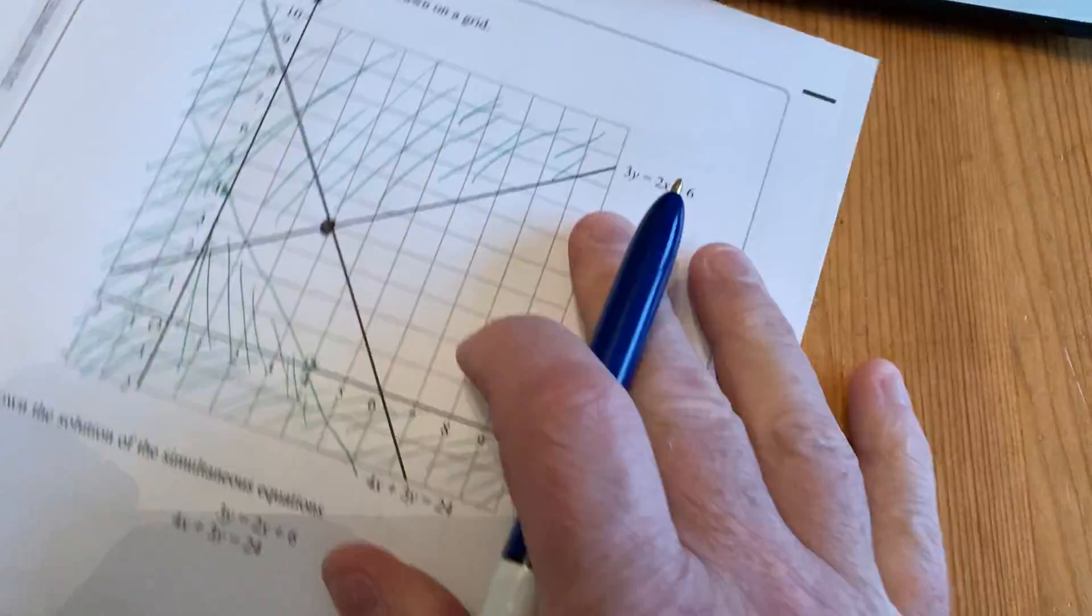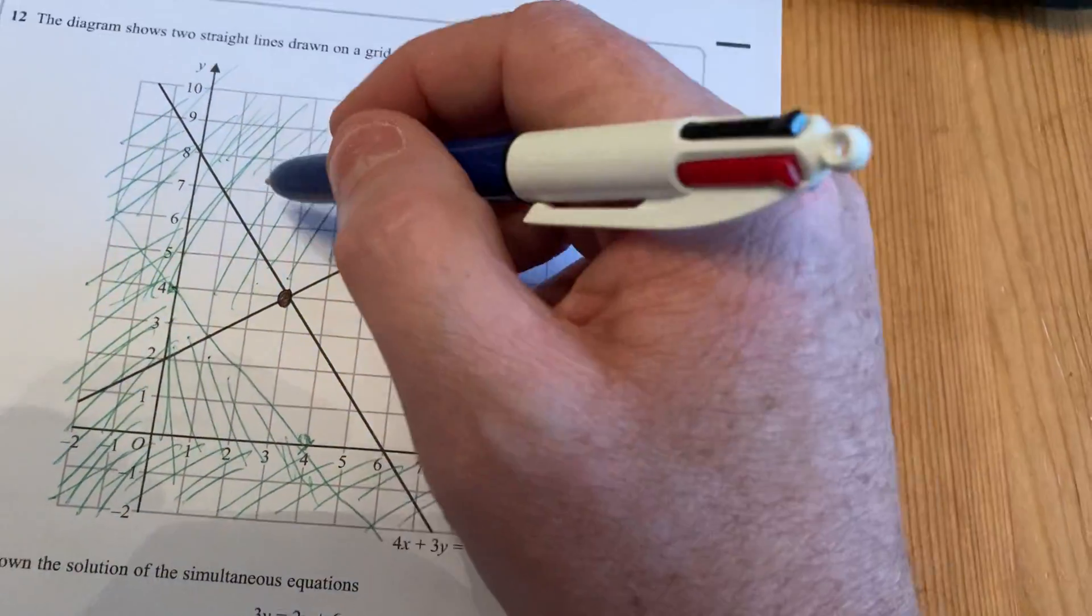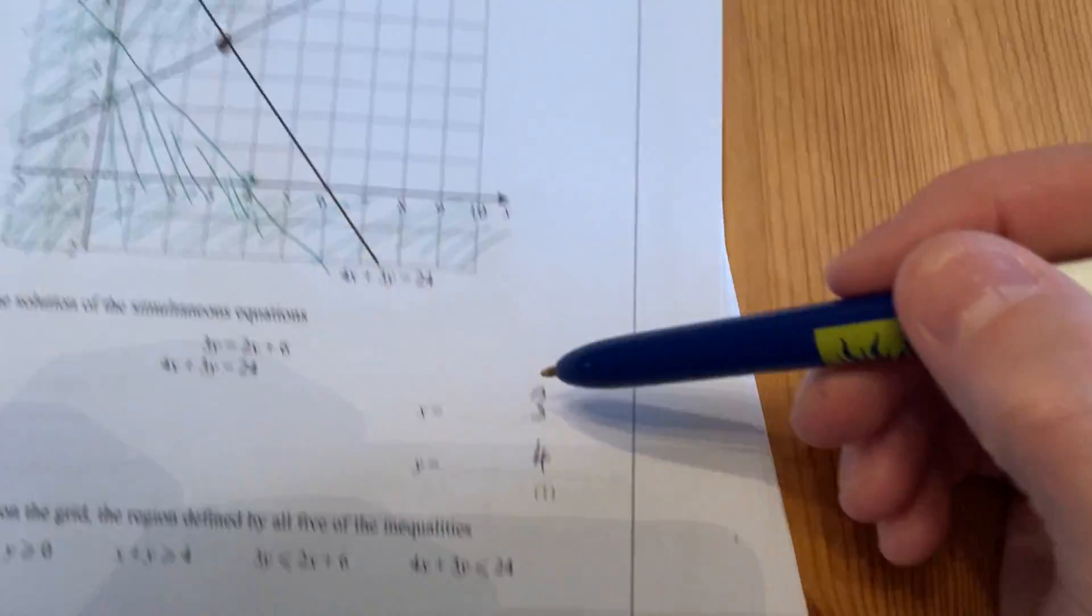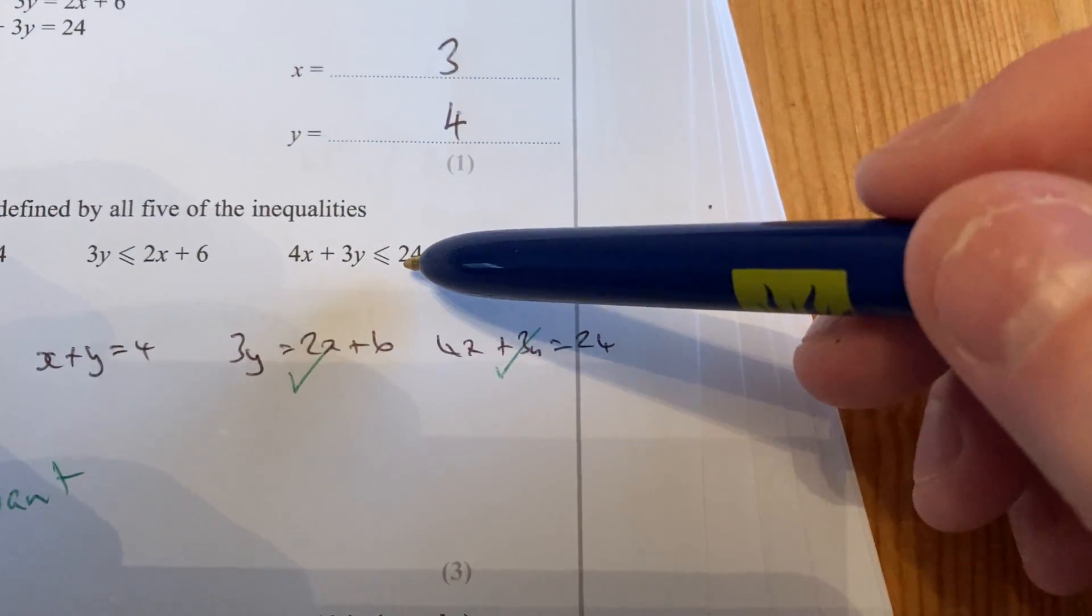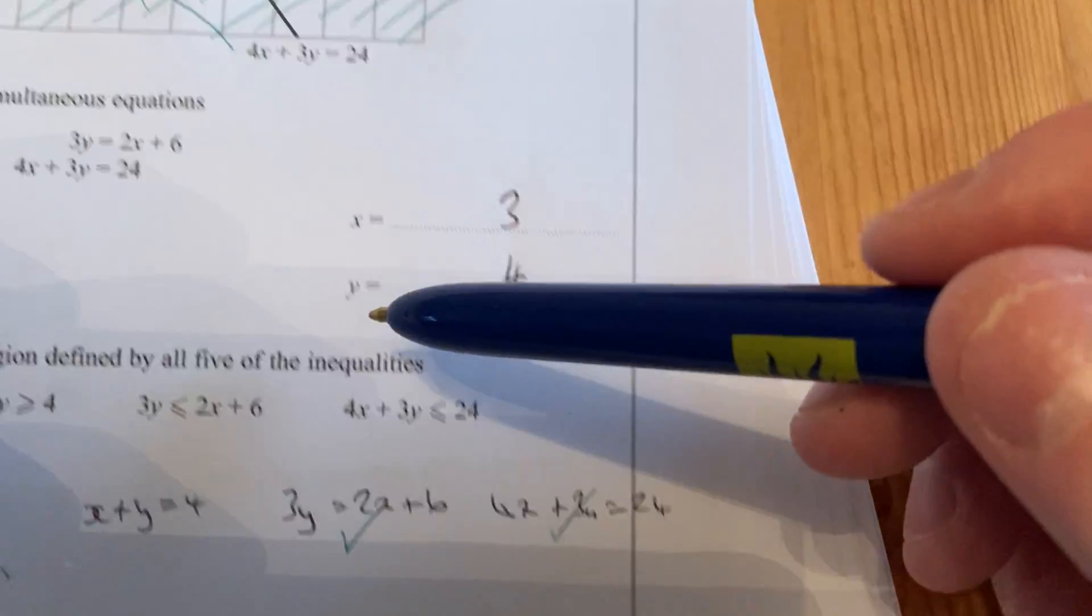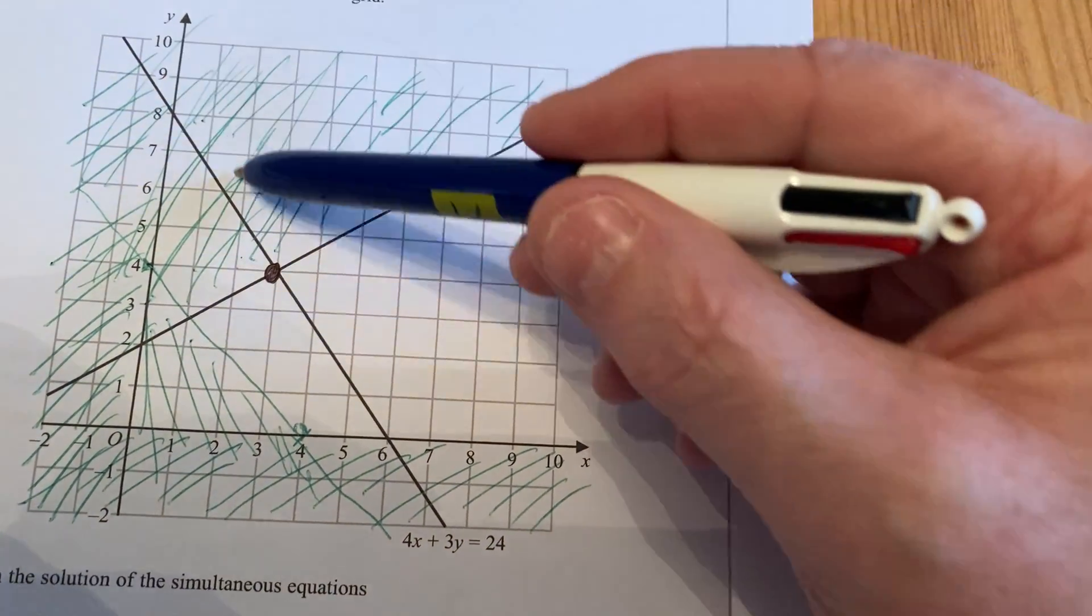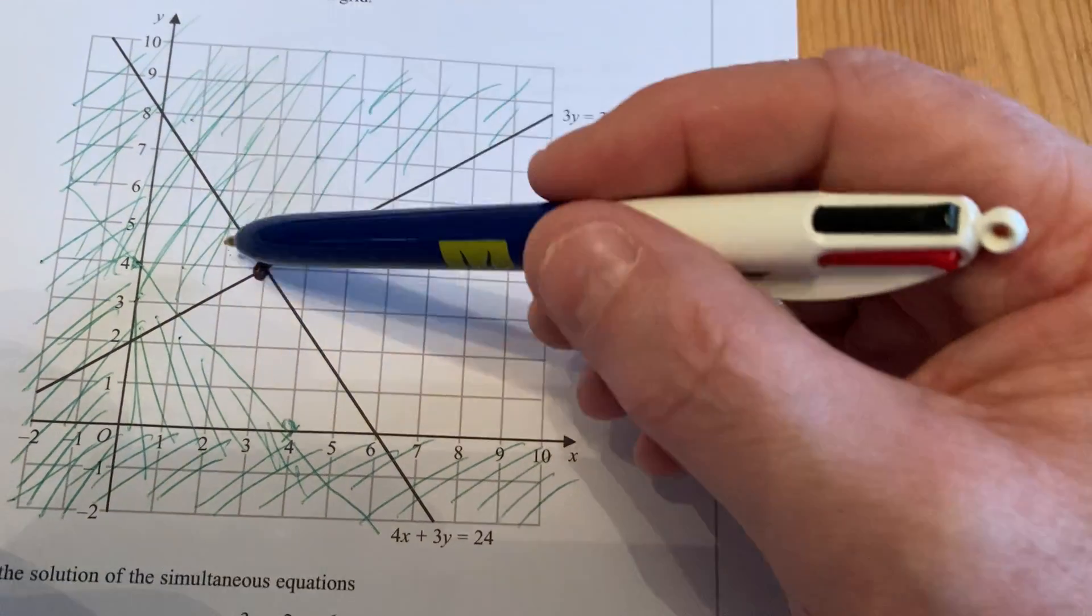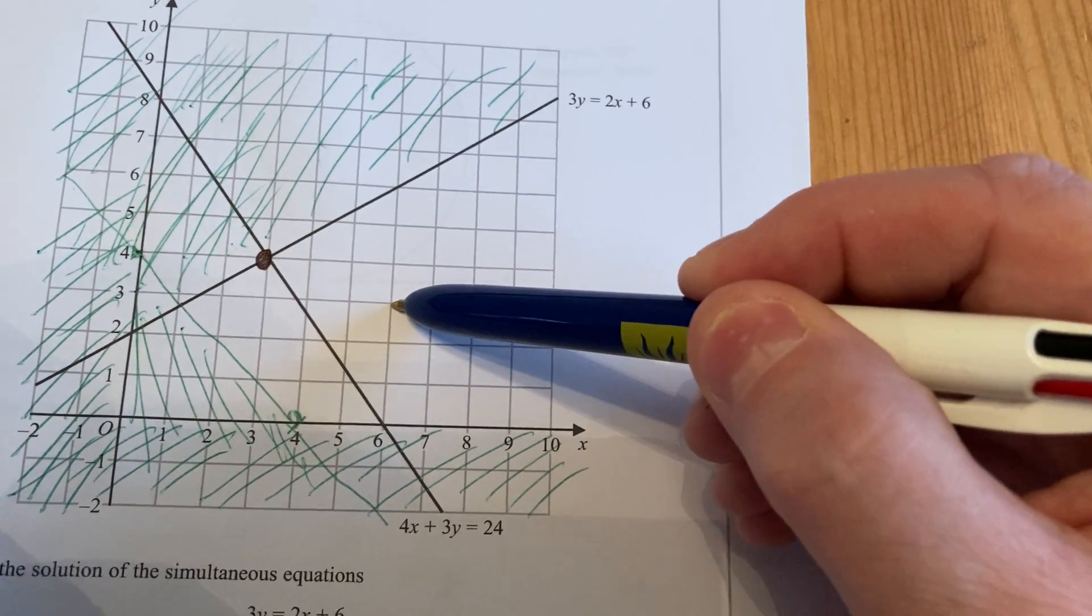Okay, so try a point, see if it works in the equation. Is it the side of the line that you want or not? And then finally, the final line is 4x plus 3y needs to be smaller than 24. So this is the line where it equals 24. I'm just going to decide whether this point here, this point here is the 0.63.